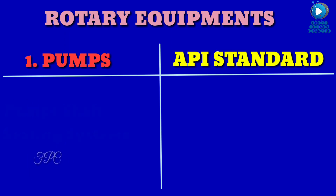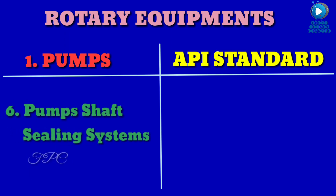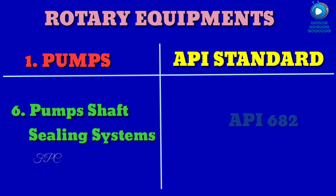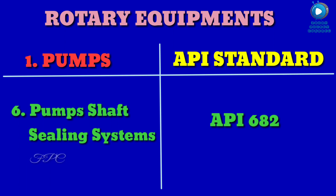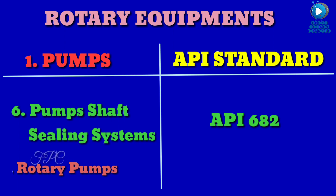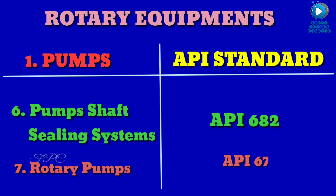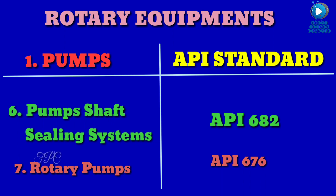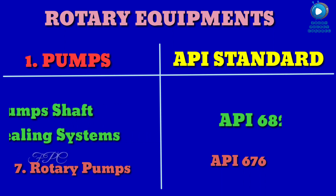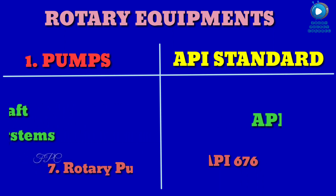Number six, shaft sealing systems for pumps, API 682. Number seven, rotary pumps, API 676.